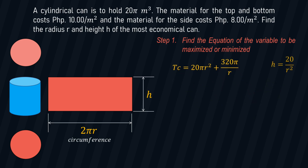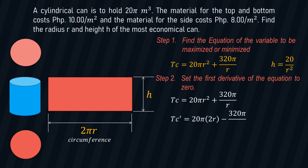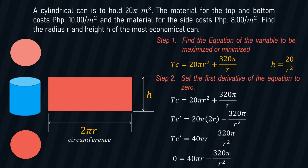Step number two: set the first derivative of the equation to zero. Taking the first derivative of TC = 20πr² + 320π/r, we get TC' = 40πr − 320π/r². Setting TC' = 0 and solving for the value of r, we get r = 2 meters.